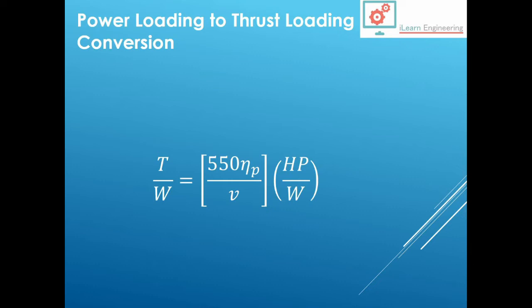If you want to convert these power loadings for propellers to the thrust loading that we talked about earlier on, then you can use this equation here. V is the velocity, eta P is the efficiency of the propeller, HP is the power in horsepower for the propeller. Note also that this is the inverse, this is 1 over the power loading.